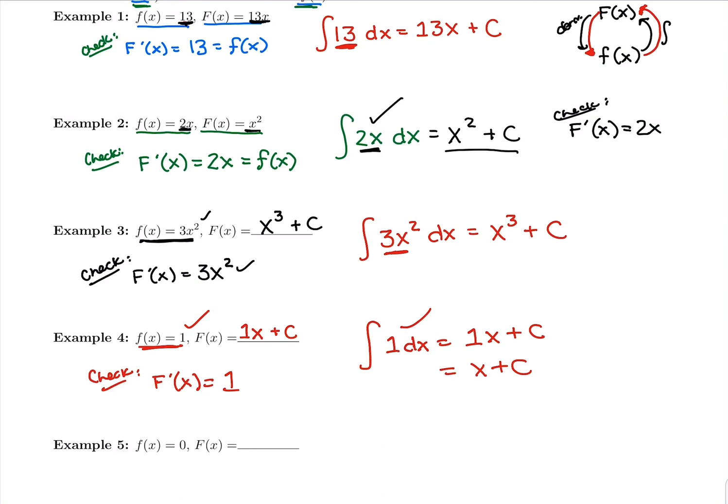Our last one here on this warm-up is we have a derivative of 0. I want to think about what the original function must have been. What has a derivative of 0? Every single constant has a derivative of 0. So the antiderivative of 0 with respect to x must have been any constant c.